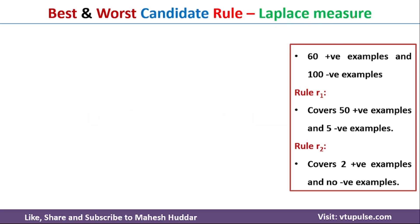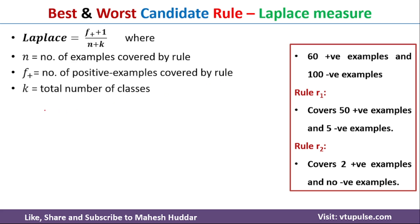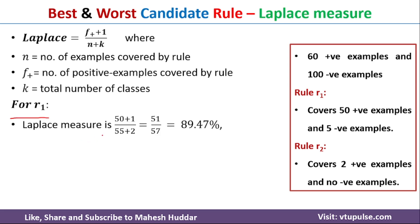Coming to the third metric, the Laplace measure for a particular rule is calculated as (f+ + 1) divided by (n + k), where n is the total number of examples covered by that rule, f+ is the number of positive examples covered, and k is the total number of classes. For rule number one: (50 + 1) / (55 + 2) = 51/57, which equals 89.47%.